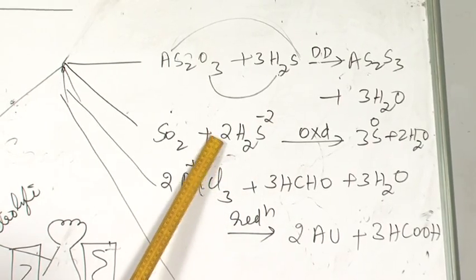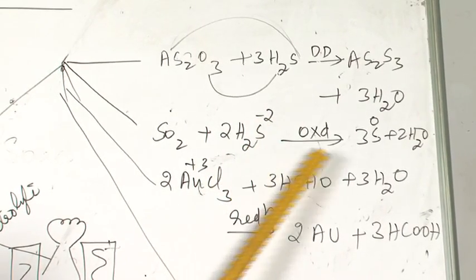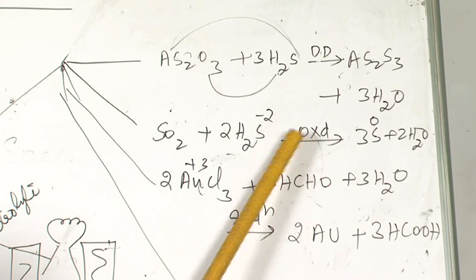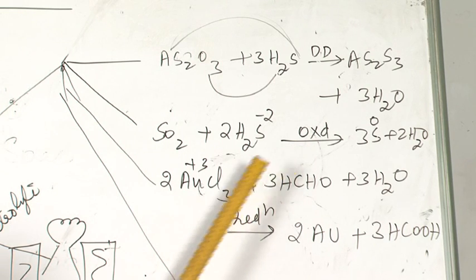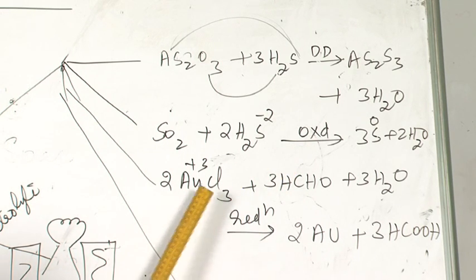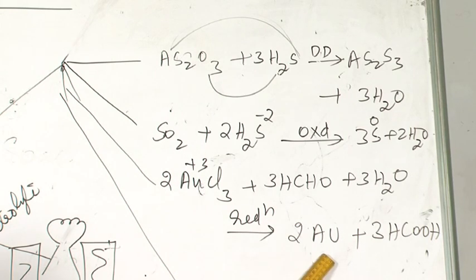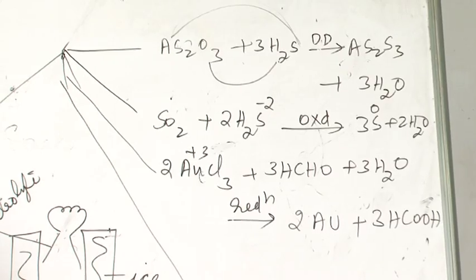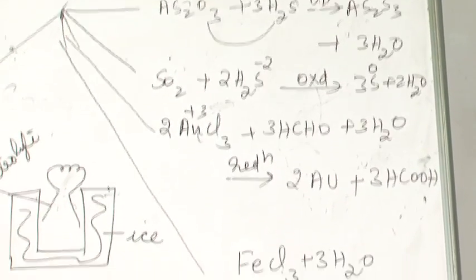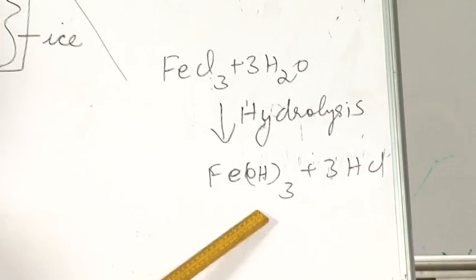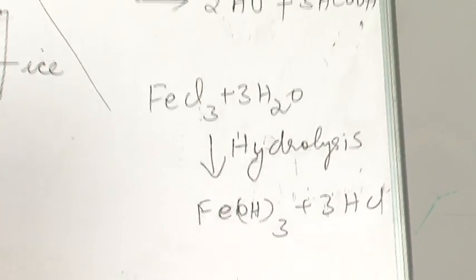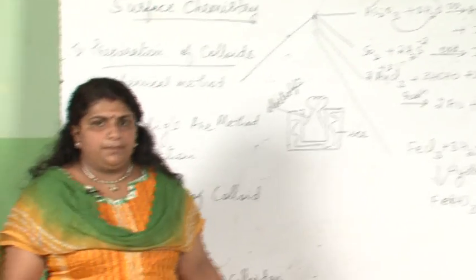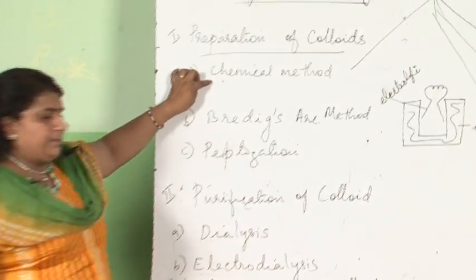Here you can see it is oxidation — sulfur is in a minus 2 oxidation state and becomes 0, so this is an oxidation process. This is reduction — it was in plus 3 oxidation state, accepted electrons, and becomes silver, which is reduction. Here it is hydrolysis — addition of water — where ferric chloride becomes ferric hydroxide. You will be doing the preparation of ferric hydroxide in your practicals. This is the chemical method of preparation.